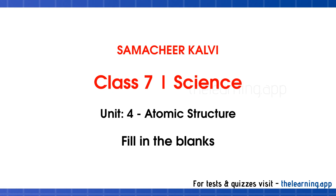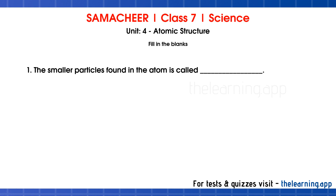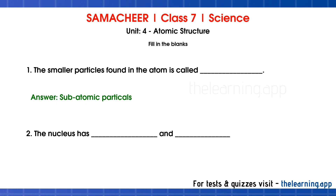Fill in the blanks. Question 1: The smaller particles found in the atom are called dash. Correct answer is subatomic particles. Question 2: The nucleus has dash and dash. Correct answer is protons and neutrons.